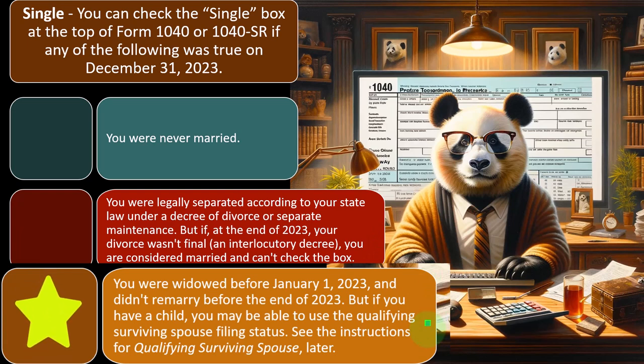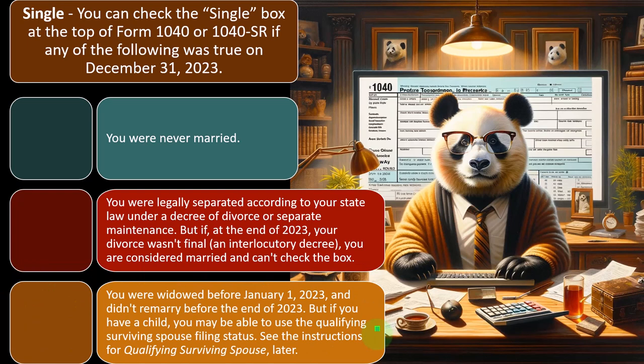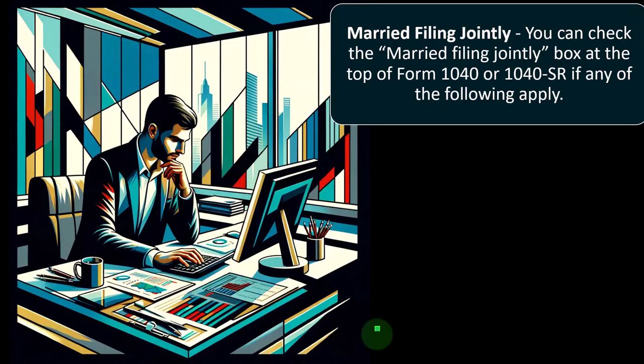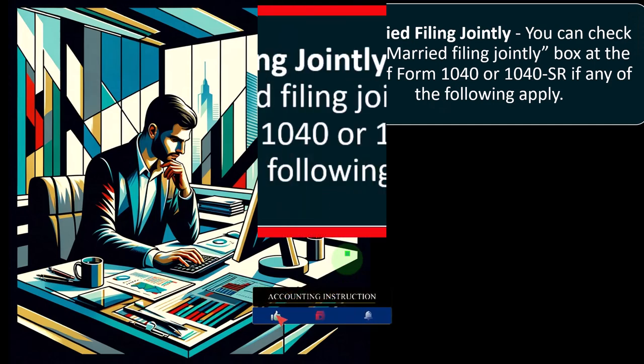You can also check single if you were widowed before January 1, 2023, and didn't remarry before the end of 2023 — though if you have a child, you may be able to use the qualifying surviving spouse filing status. If the spouse dies, the key question is whether you qualify as a qualifying widow or widower. If not, you revert to single, which is typically the least favorable status.